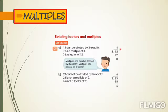we have here a solution to prove that if 3 is a factor of 12. 12 divided by 3 equals 4, 4 times 3 equals 12, 12 minus 12 equals 0. Therefore, 3 is a factor of 12. Multiples of 3 can be divided by 3 exactly, so multiples of 3 have 3 as a factor.